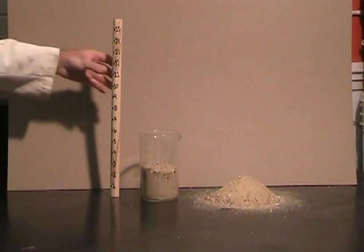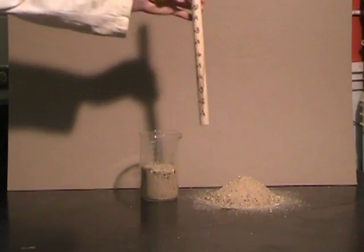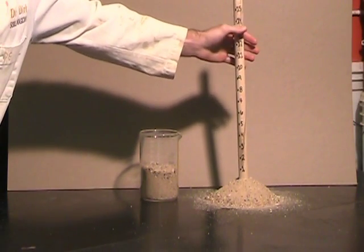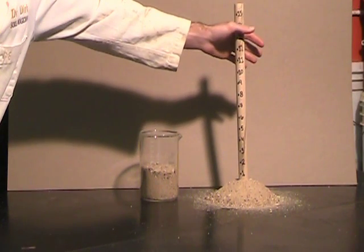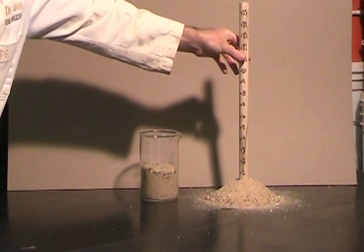Now we're going to proceed with the experiment, placing the rod in the loose sand on the table. The rod settles about half an inch under its own weight on the loose sand.